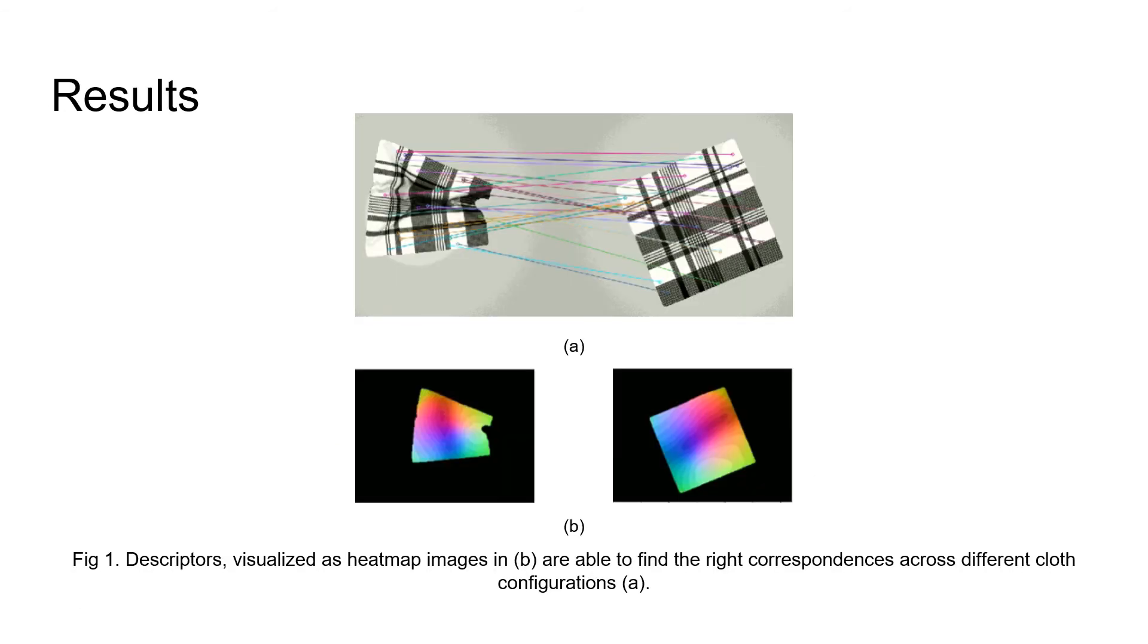The high dimensional descriptors in our case are three-channel vectors. These are visualized as heat maps in Figure B. We find correspondences between two images using the descriptors by finding pixels which have minimum distance.